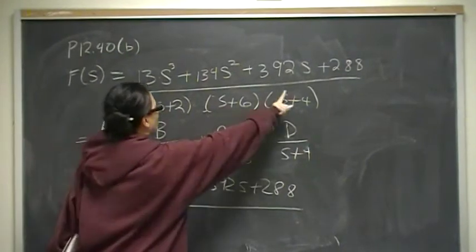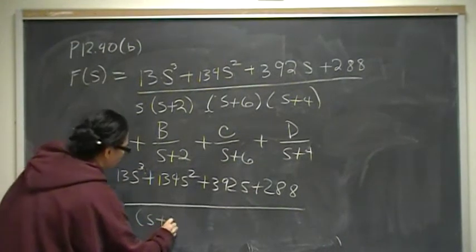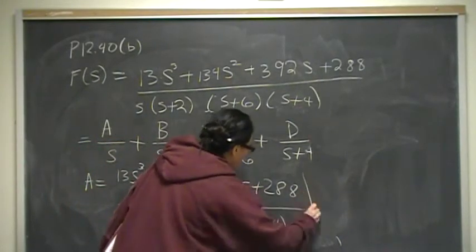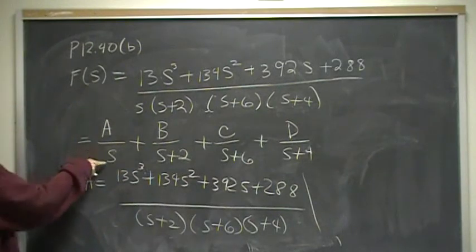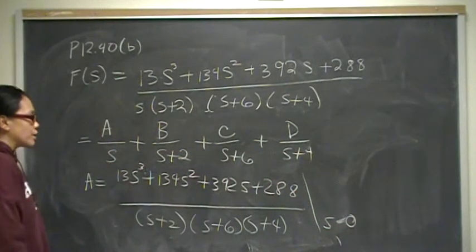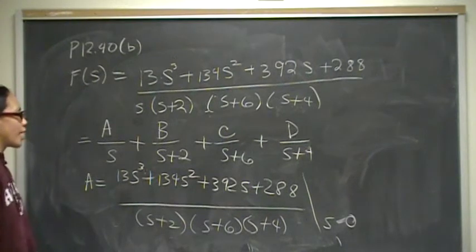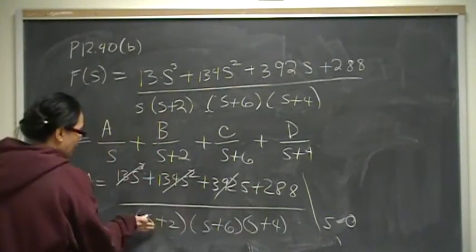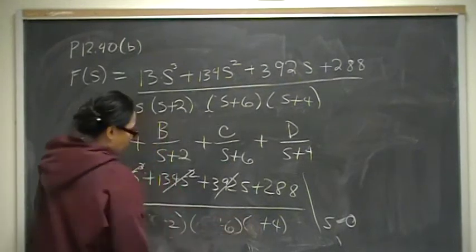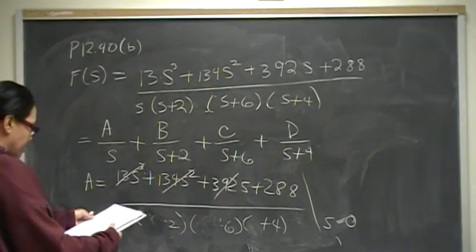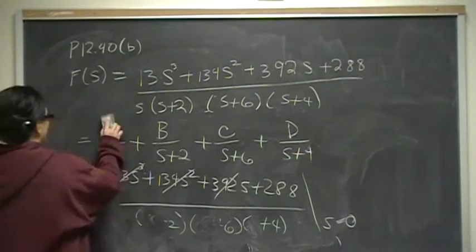So A has the S, and we fill in everything else: (S+2)(S+6)(S+4), evaluated at wherever the denominator is zero. In this case, that's S = 0. When S is 0, the S³, S², and 392S terms are all 0, leaving 288 in the numerator, and the denominator is 2 × 6 × 4 = 48. So A = 288/48 = 6. We found A; A is 6.